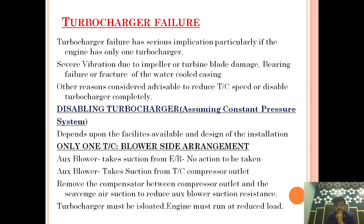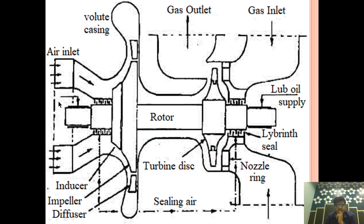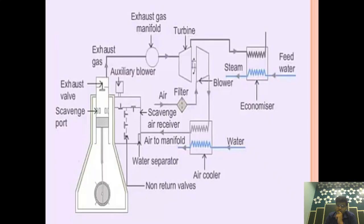So if a turbocharger failure occurs — if this turbocharger has failed because of a damaged impeller, damaged turbine, damaged rotor, or a bearing that got damaged — in that case the turbocharger will be out of operation, which will create a serious problem. For that purpose, if you have only a single turbocharger, you have to use an auxiliary blower and reduce the engine RPM to half or slow, depending upon the vibration, temperature, and overall condition.